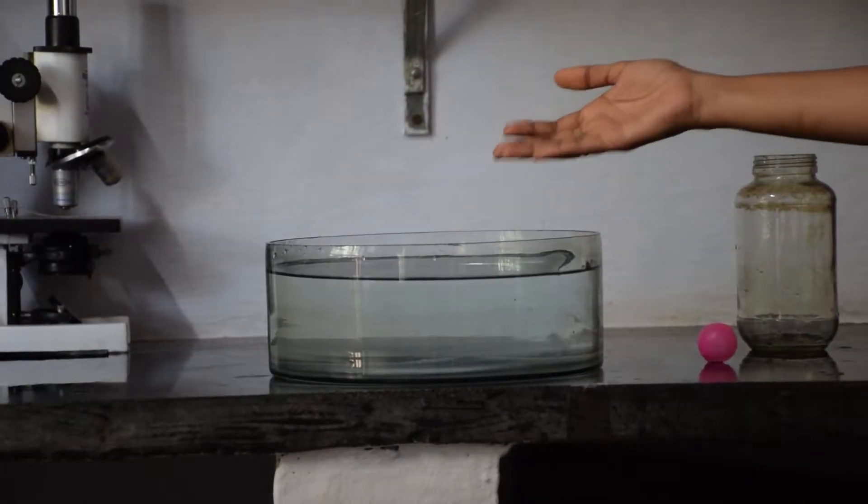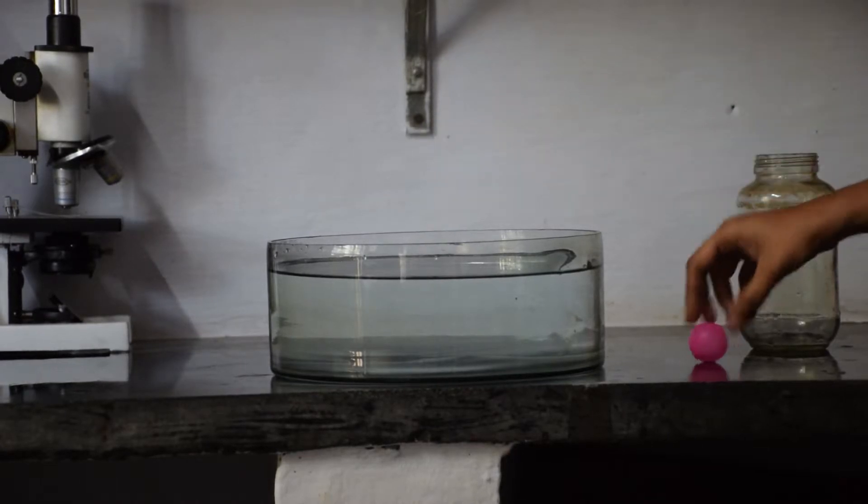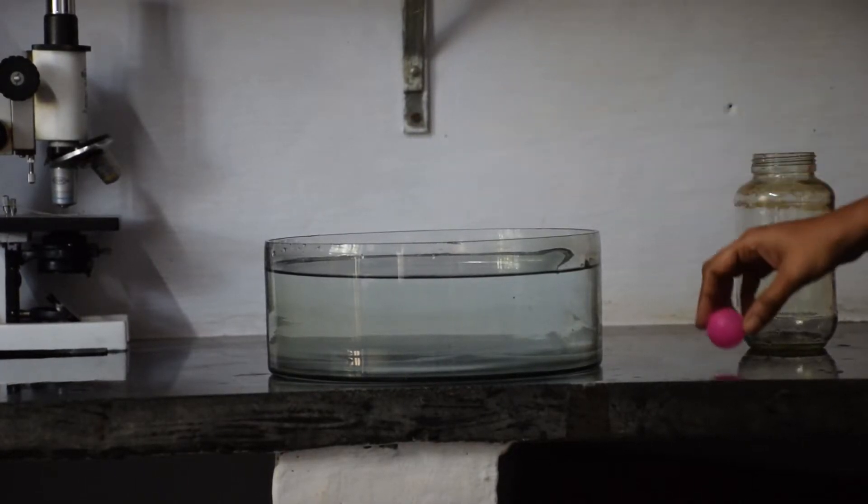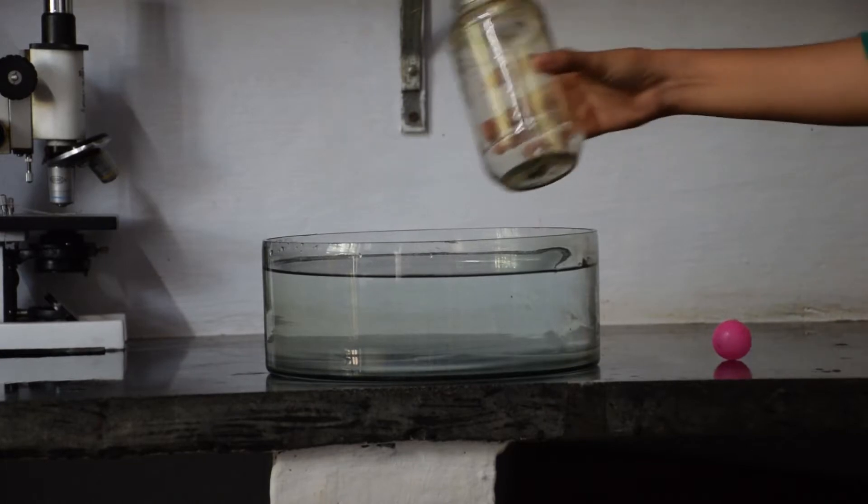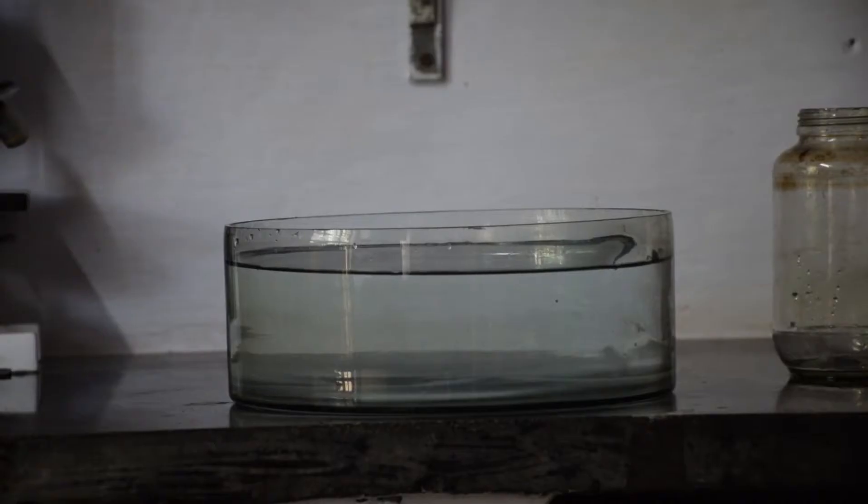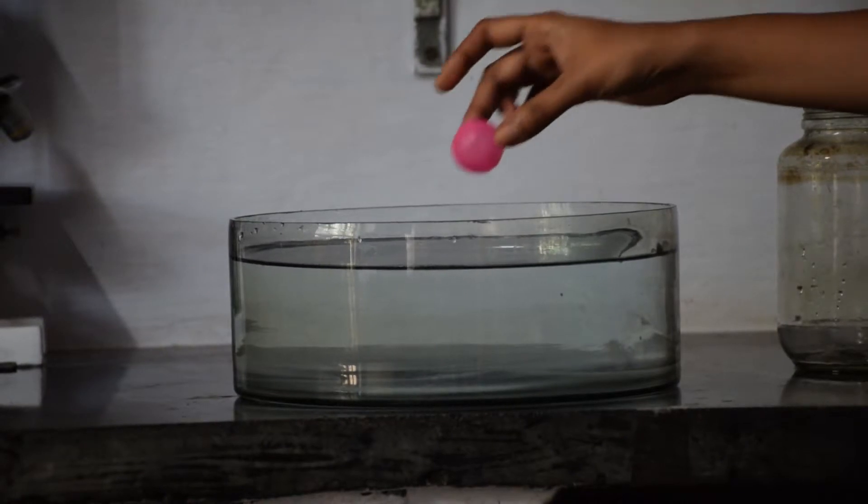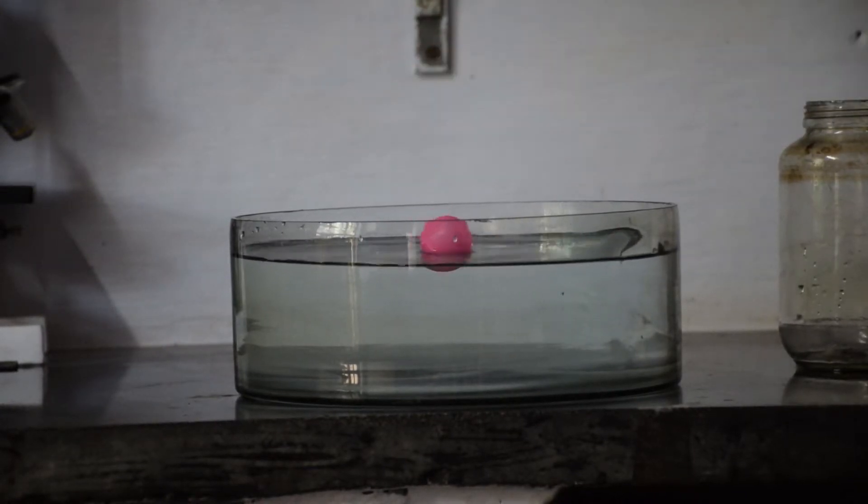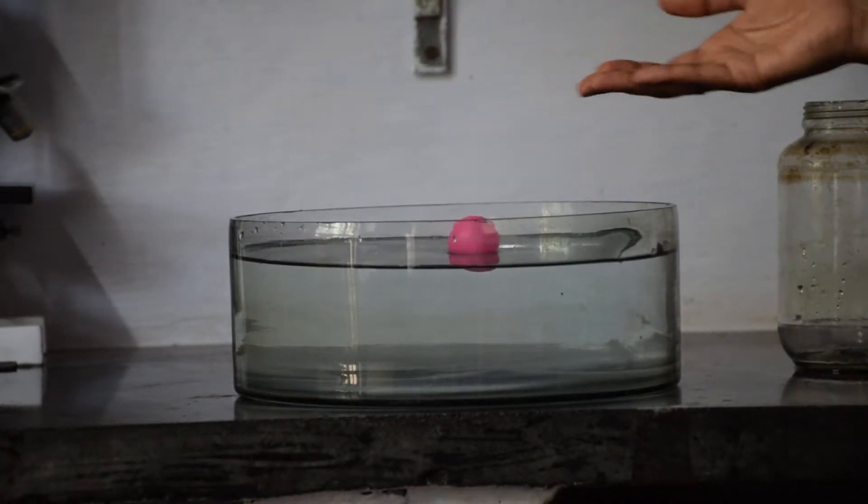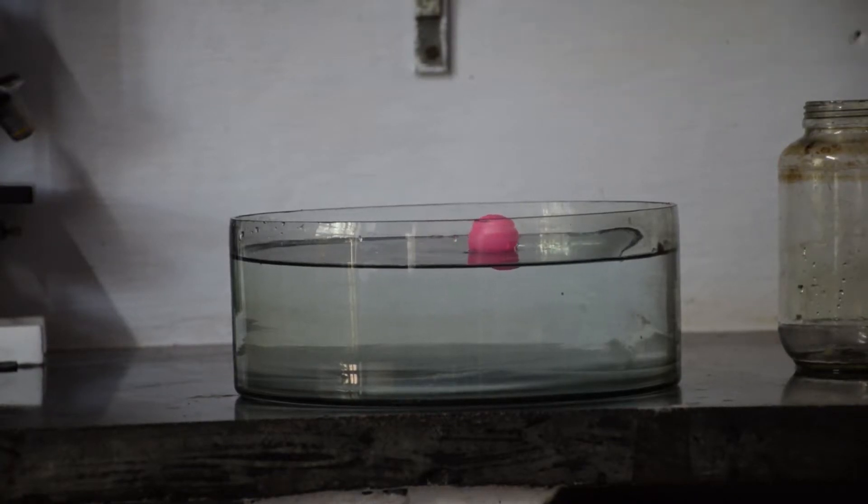All we need for this experiment is a vessel filled with water, a plastic ball, and an old glass bottle. Now we are going to put the plastic ball into the water. As you can see, the ball is very light so it floats on top of the water.